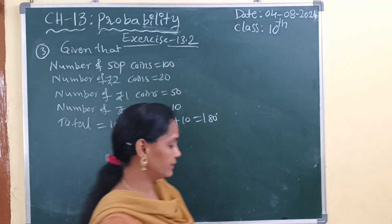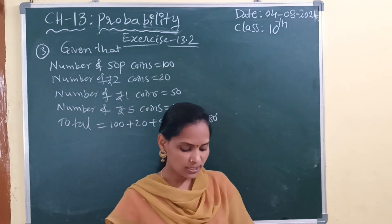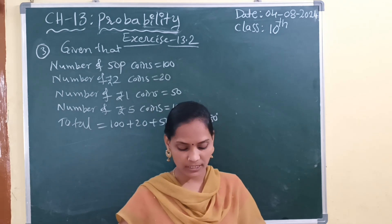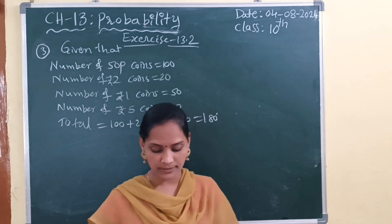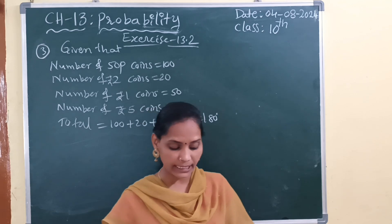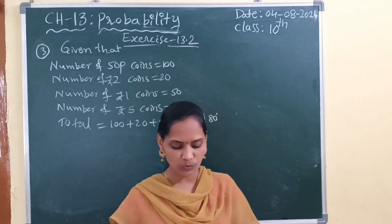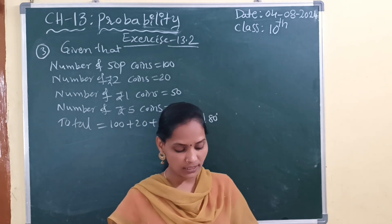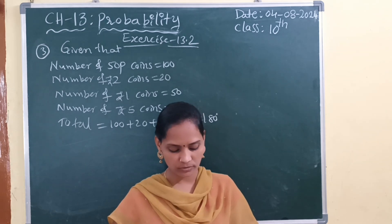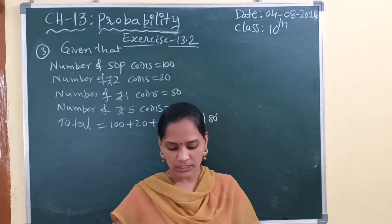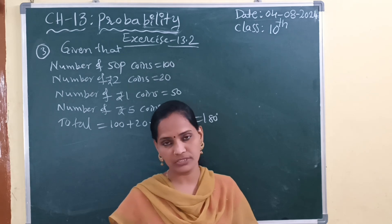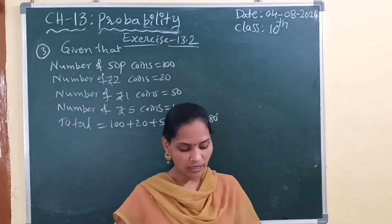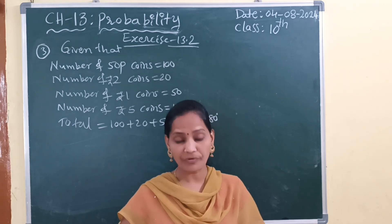Before going to the explanation, let me read the question. A piggy bank contains 150 paise coins, 50 one-rupee coins, 20 two-rupee coins, 10 five-rupee coins. If it is equally likely that one of the coins will fall out when the bank is turned upside down, what is the probability that the coin will be — first: a 50 paise coin; second: it will not be a 5-rupee coin.